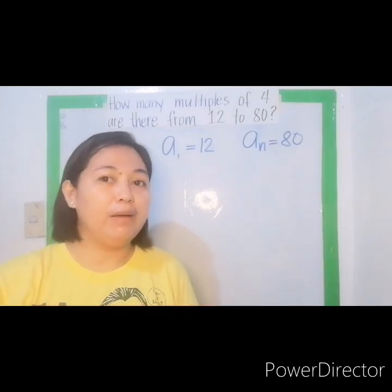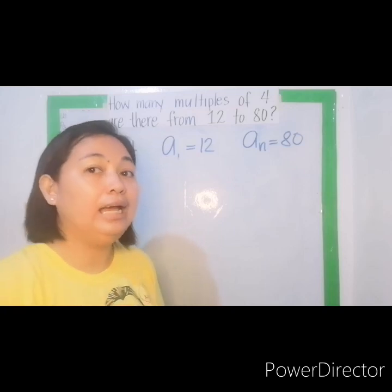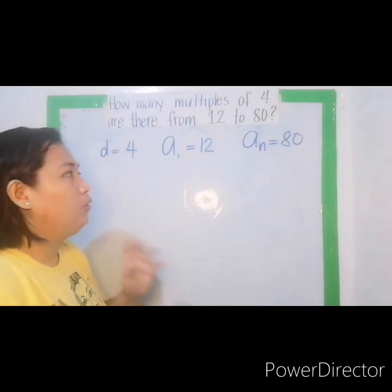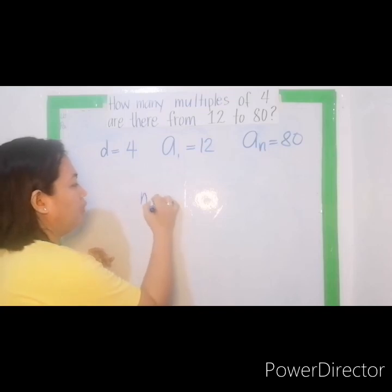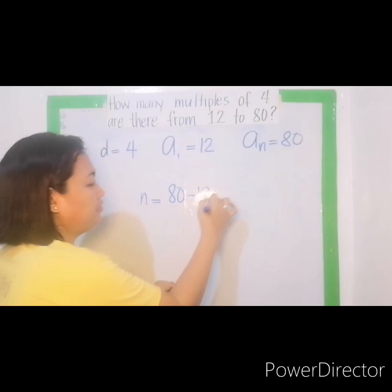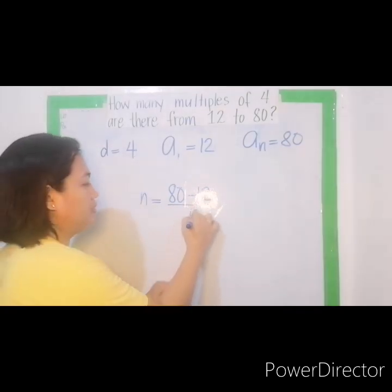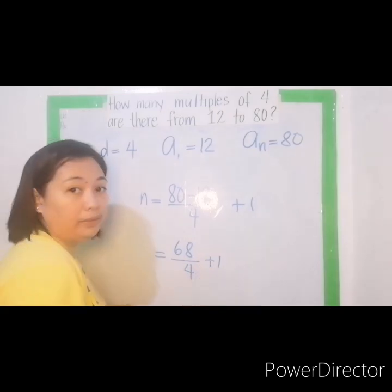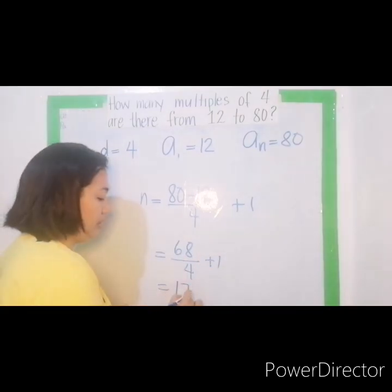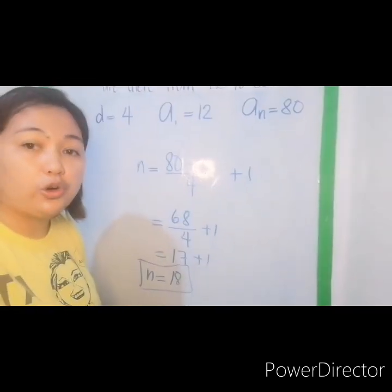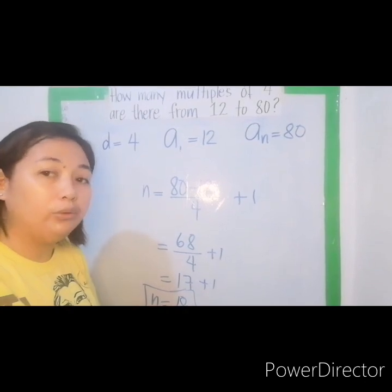Kanina medyo feeling ko nahirapan kayo doon. But I'm going to give you a shortcut. Ganito. How many multiples of 4 are there from 12 to 80? Ganito lang ang gagawin natin. Hinahanap natin si n equals we're just going to subtract the two given terms. So 80 minus 12 then divide it kung ano ang ating d, that's 4. Then, ang last nagagawin is plus 1. 80 minus 12 is what? 68 over 4 plus 1. 68 over 4 is 17 plus 1 that is 18. N is 18. So this is the shortcut on how to answer questions when you are looking for the multiples.